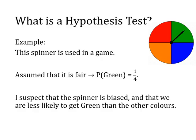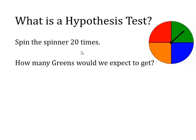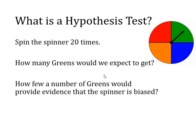But what if I suspect that the spinner is biased and that we are less likely to get green than the other colours? There might be a reason for suspecting this — perhaps I didn't get as many when I tried it. So what I'm suspecting is that the probability of getting green is less than one-quarter, and we might want to actually test whether that is true. We'd probably spin it lots of times — maybe 20 times. If it was a fair spinner, we would expect to get five greens. But how few a number of greens would provide evidence that the spinner is indeed biased?